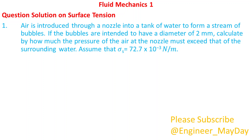Air is introduced through a nozzle into a tank of water to form a stream of bubbles. If the bubbles are intended to have a diameter of 2 mm, calculate by how much the pressure of the air at the nozzle must exceed that of the surrounding water. Assume that surface tension is equal to 72.7 times 10 to the power negative 3 newtons per meter.